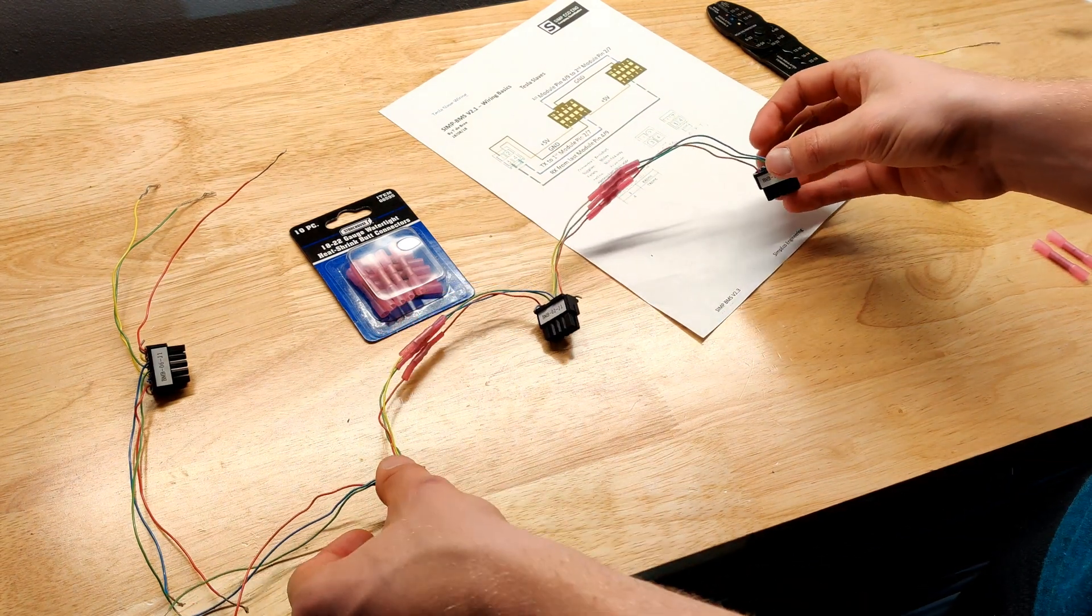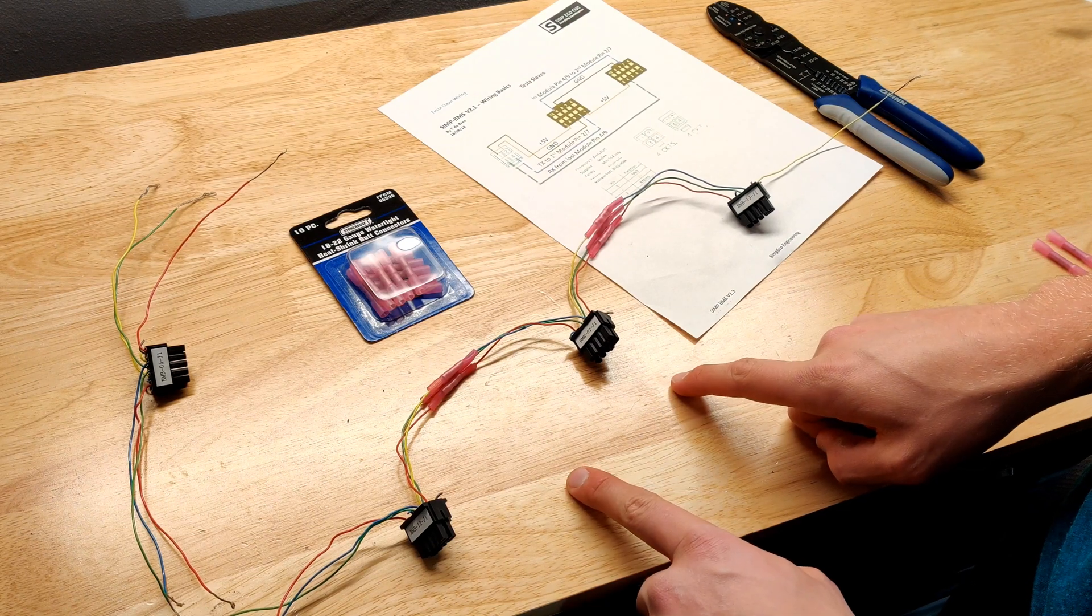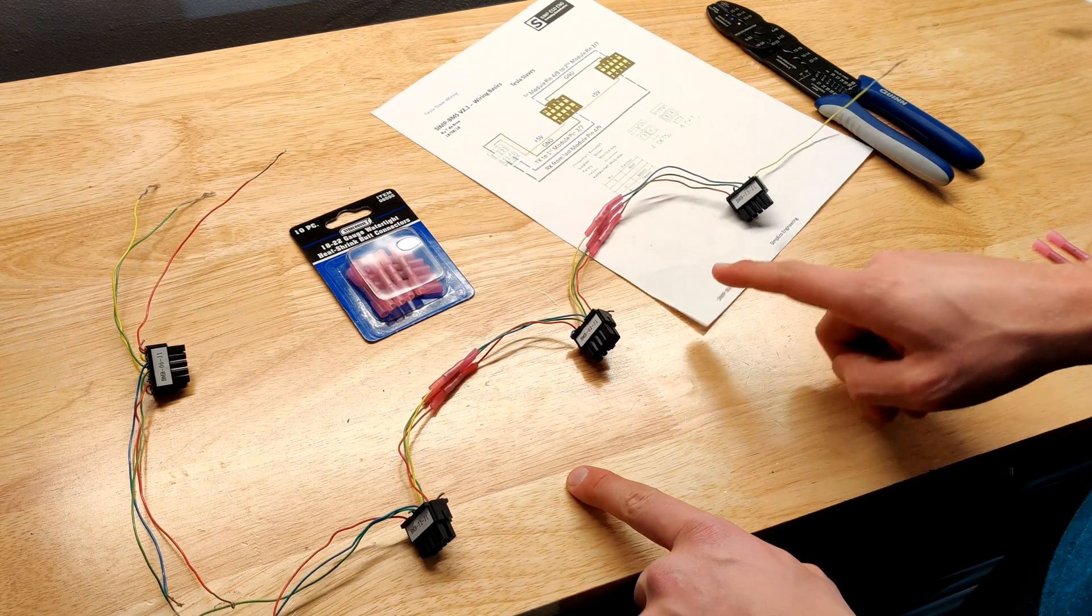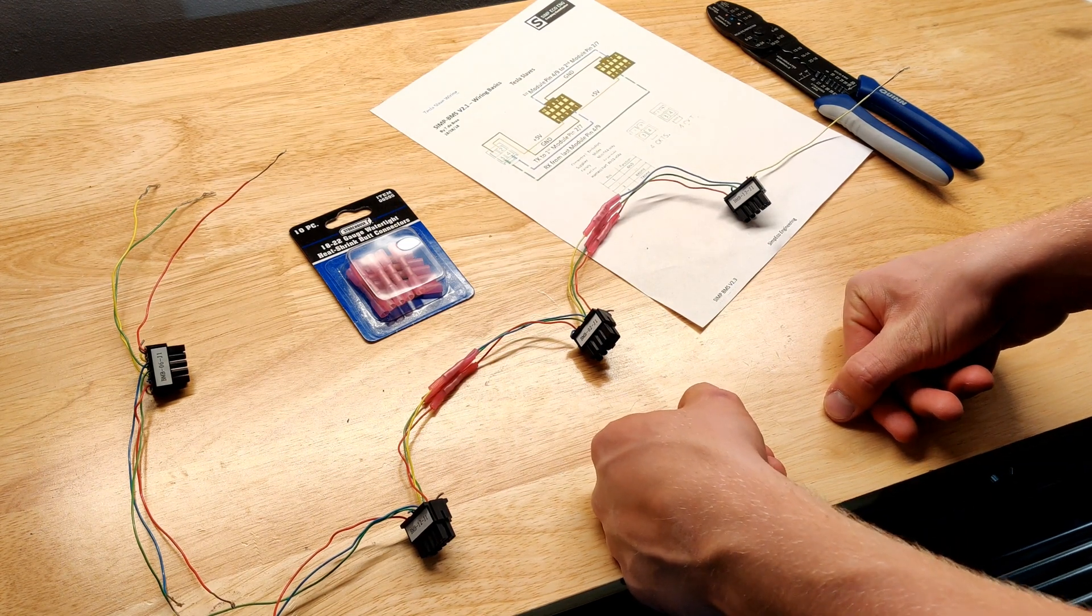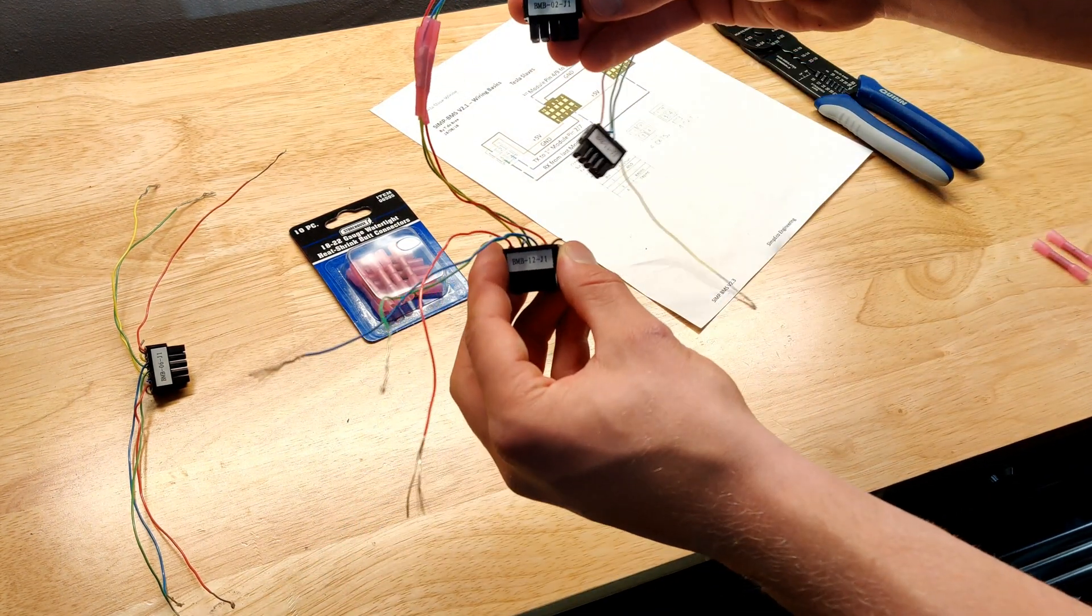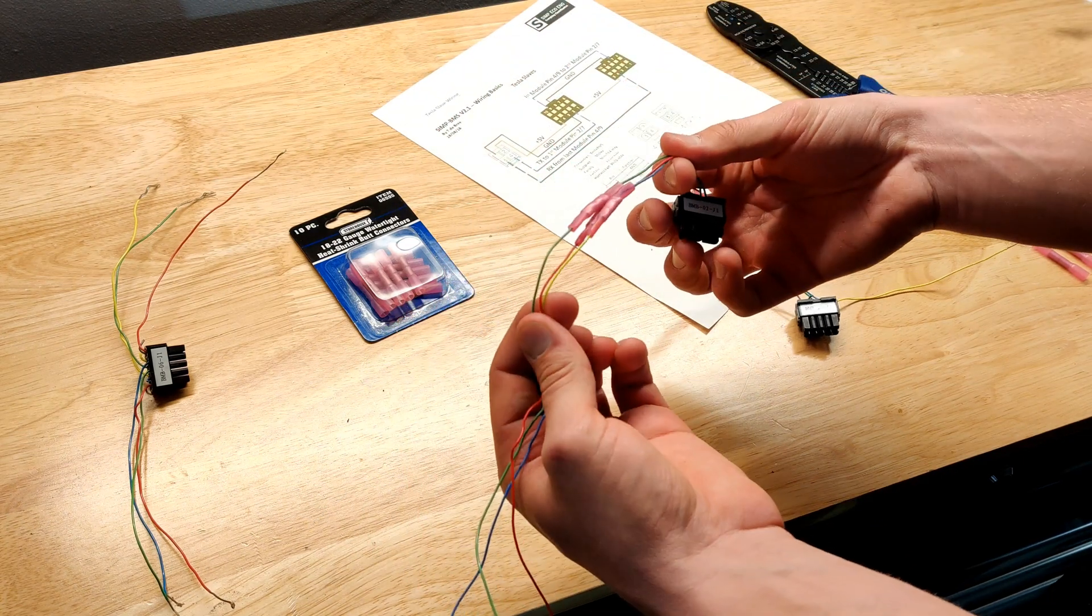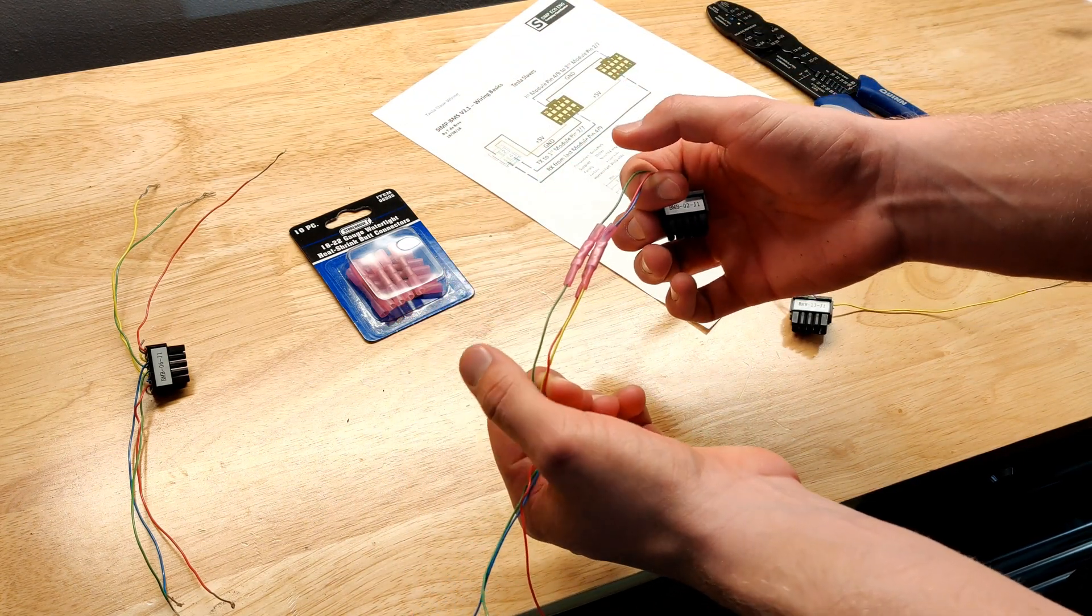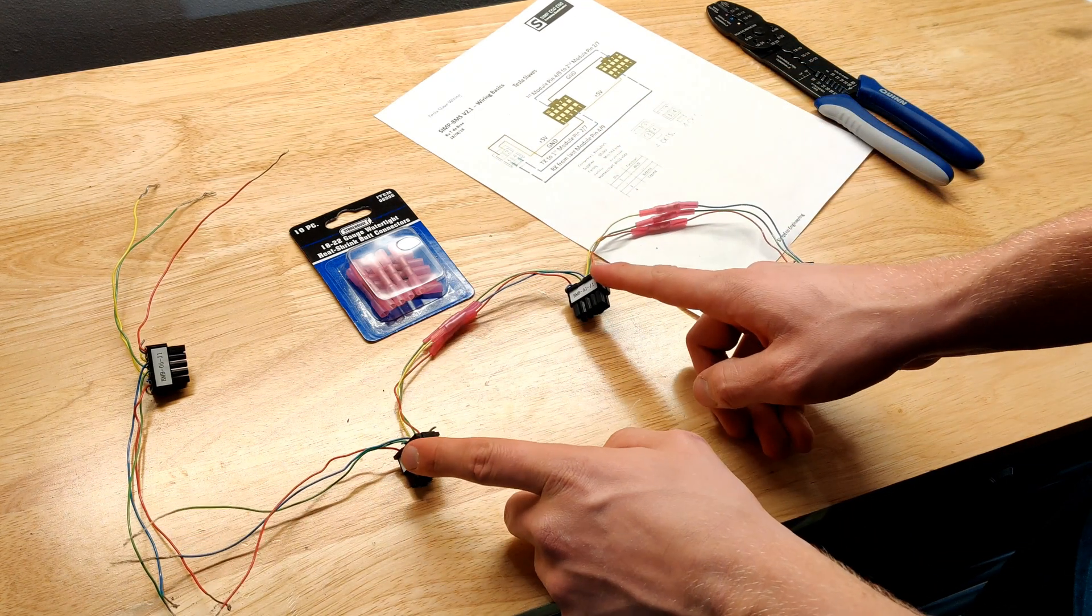When you're wiring them up, you want to keep in mind how far apart your modules will be. From my use case, with these three connectors, these are for the rear battery box, which has three modules stacked vertically. These plugs will be oriented something like that real close to each other. When you're stacking modules like that, you really only need about 3, 3.5 to 4 inches of wire between the connectors.